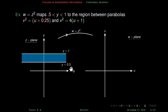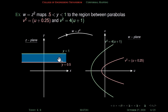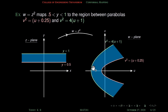The image of y = 0.5 under the map z² is the parabola v² = u + 0.25, and the image of y = 1 under z² is the parabola v² = 4(u + 1). The region between y = 0.5 and y = 1 is mapped onto the region between these two parabolas — both are infinite regions. We will analyze this problem in detail later with the help of the analyticity of z².